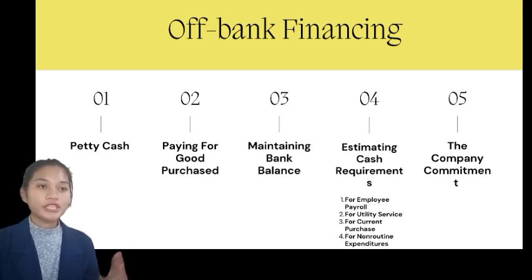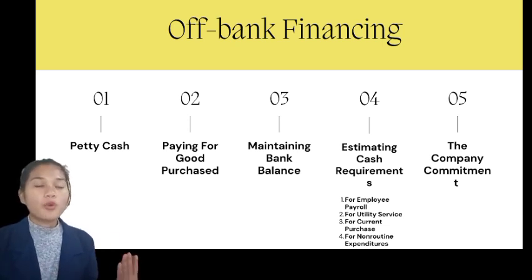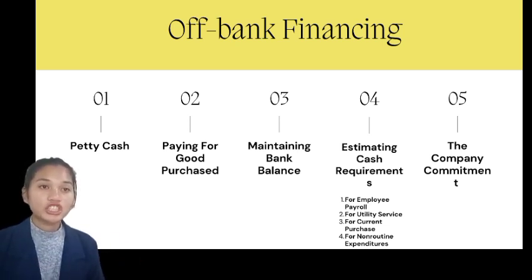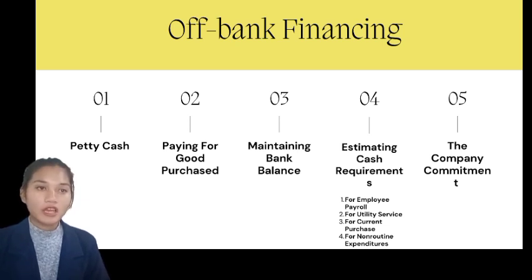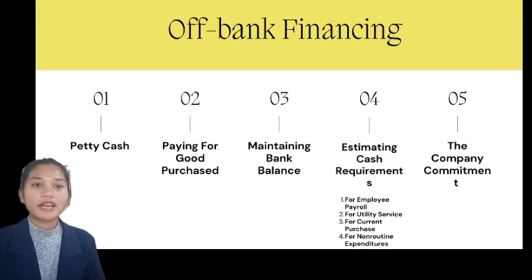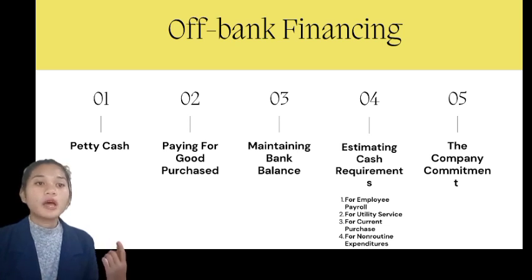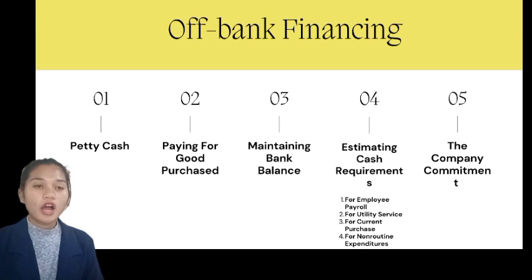The cash requirements include: first, employee payroll — one of the company's initial regular expenses. Every week, on the 15th, or at the end of the month, payroll obligations must be met. Payday occurs periodically and workers and employees must be paid right away. There are three different types of payroll: piece rates, hourly wage, and regular salary. The second requirement is for utility services. Typical utilities including phone, telegram, light, and power are billed on a monthly basis. These financial needs can be predicted and planned in advance.